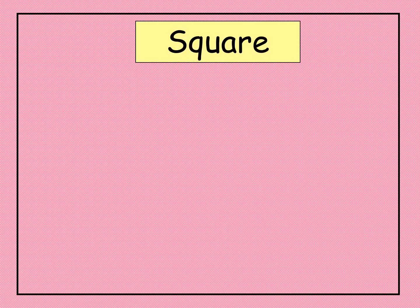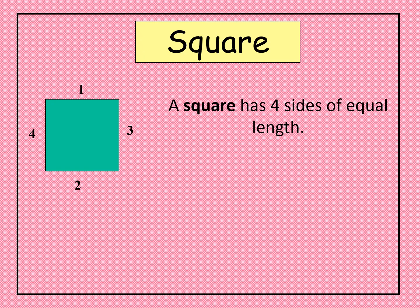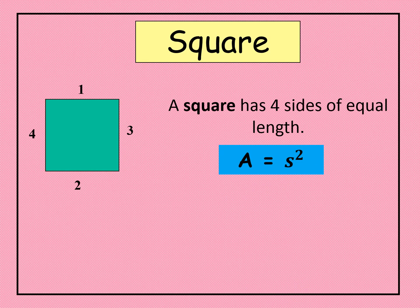Let's discuss the different kinds of plane figures. Let's start with the square. A square has four sides of equal length. The formula for the area of a square is A equals S squared, where A is for area and S is for the sides.